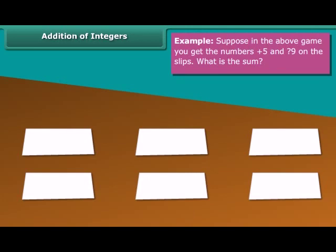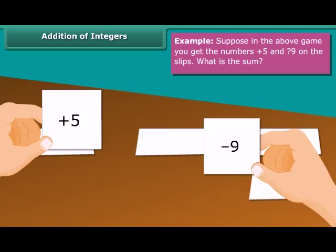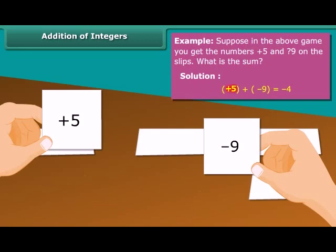Addition of two integers. Example: Suppose in the above game you get the numbers plus 5 and minus 9 on the slips. What is the sum? Plus 5 plus minus 9, which is equal to minus 4.